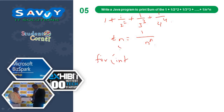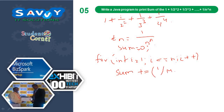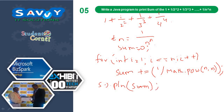For int sum equals 0, for int i equals 1 to i less than or equal to N, i plus plus, sum plus equals 1 by Math.pow(n, n). Then System.out.println sum. This is exactly what the program means.